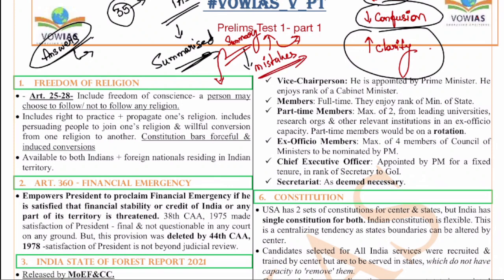For the first one week we are providing this document for all of you. It is free for all of you. The videos will be uploaded on YouTube for each and every one. But the document will be available only to registered students for the first one week. After that, people who purchase this summary will have access to all the summaries. For the first one week, we are providing this summary document for everyone. You can register using the link provided in the description.